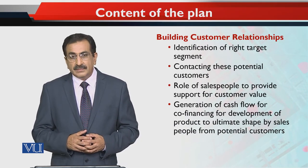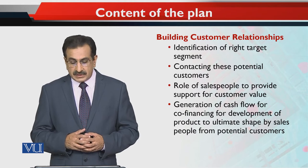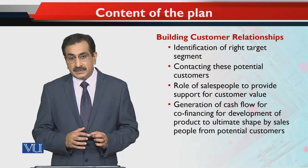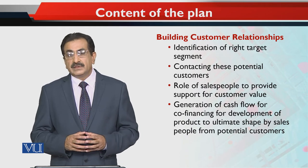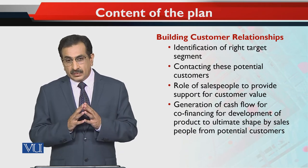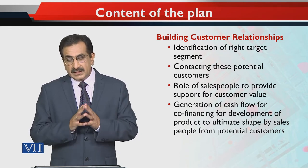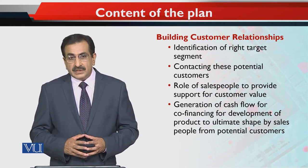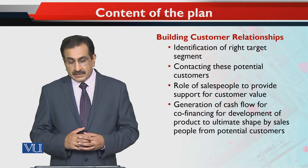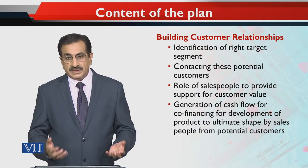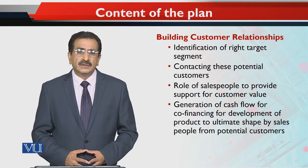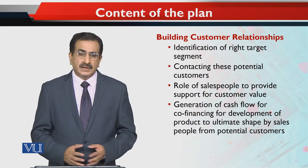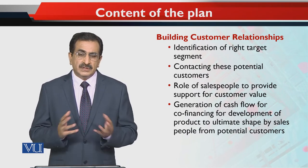Then number three is building customer relationship. Identifying — identification of right targeted customers. Ke pehle toh segment karein ke kinko aap ne yeh product bechna hai, ke kin ke saath aap ne interact karna hai. Contracting these potential customers — unke saath rapta, jo aap samajhte hain ke ye potential customers ho sakte hain, unke saath rapta karna, unko visit karna, unko engage karna, unke saath interact karna.